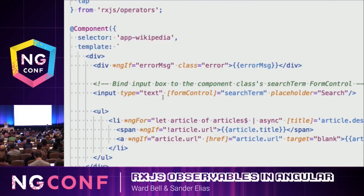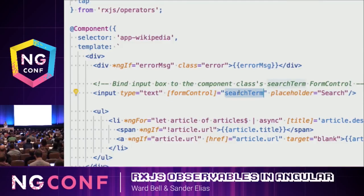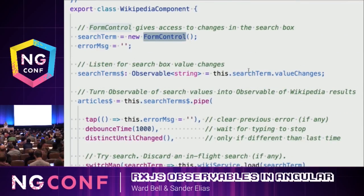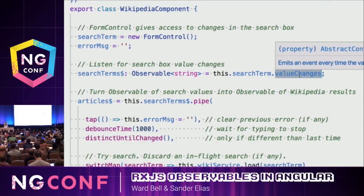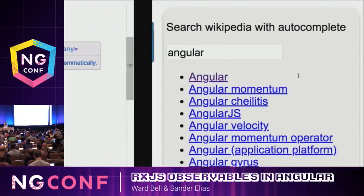By using the reactive forms module, we get to put this directive on there called FormControl. And basically we say that this input box is under the form control of something called search term. One of the cool things about search term — the form control — is that it has a valueChanges property. And yes, that is an observable.